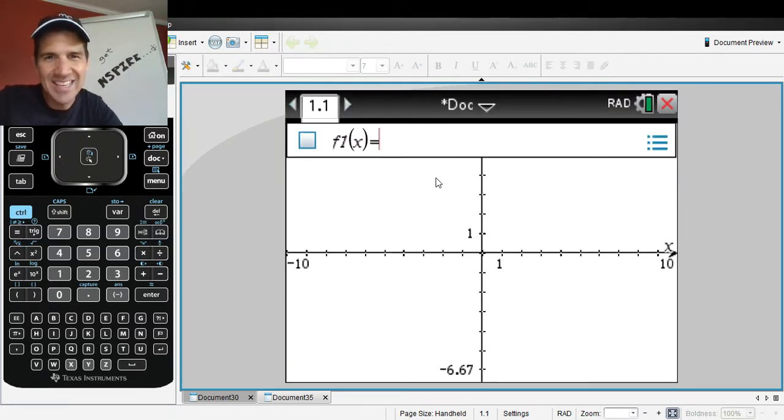I can't graph it in function mode because circles aren't functions. They don't pass the vertical line test, so I need to find another way. Well, there are two nice ways. Menu is a great place where things live.